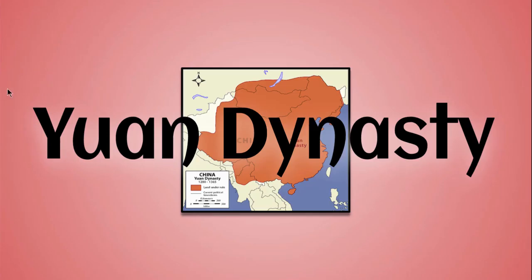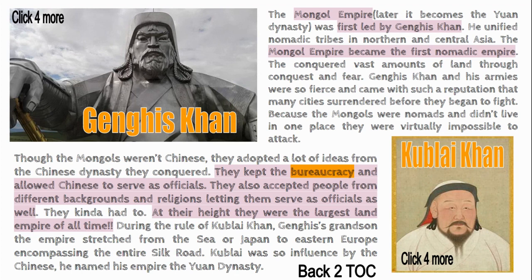The Yuan dynasty was also known as the Mongol Empire, ruled first by Genghis Khan. It unified the nomadic tribes of northern and central Asia and became the first nomadic empire. The Mongols conquered vast amounts of Asia and almost into Europe, holding at one point the largest land empire of all time. They were fierce and brutal fighters. Kublai Khan, Genghis Khan's grandson, grew the empire to its largest.